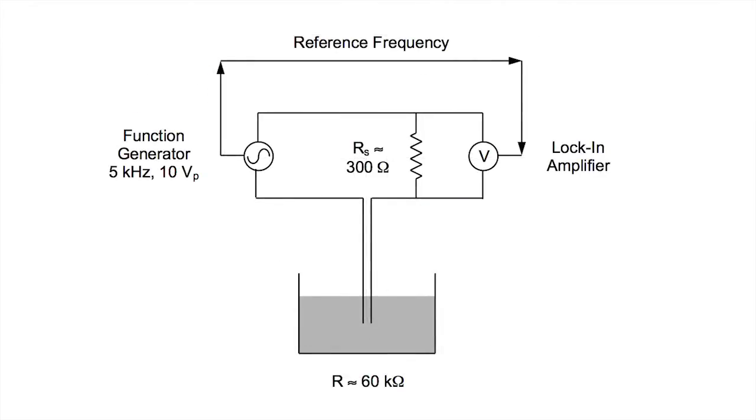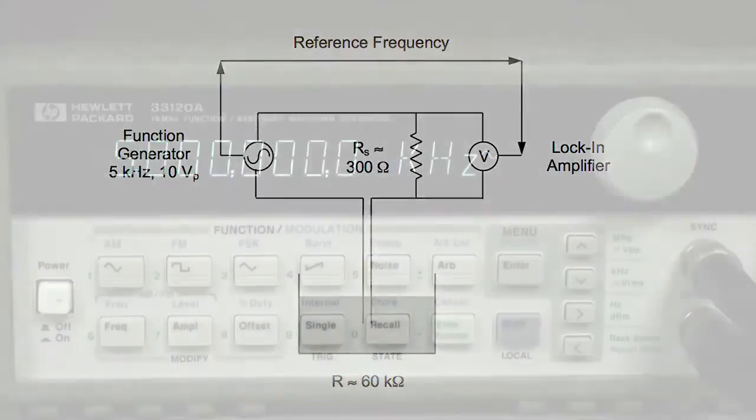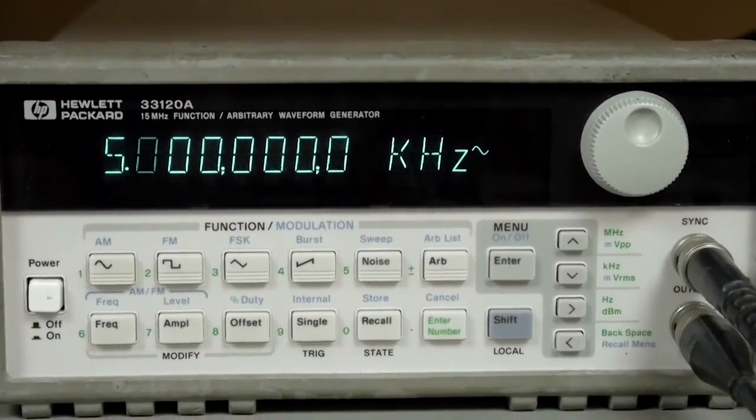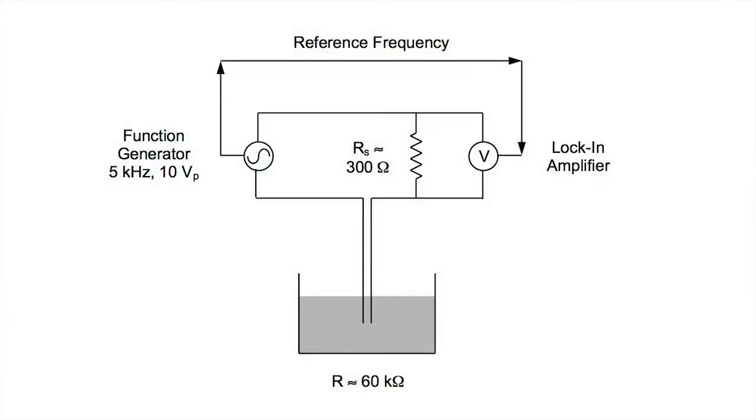The AC frequency is chosen to be much greater than the typical surface wave frequency. In our case, we choose 5 kilohertz, which is much greater than the 4 hertz wave frequency. Why do we choose such a relatively high frequency? The answer has to do with the fact that we now have still another problem.